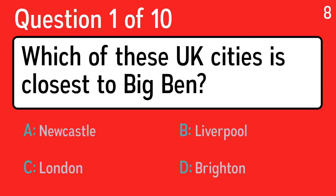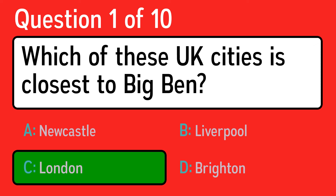The first question is: which of these UK cities is closest to Big Ben? The correct answer is C, London.